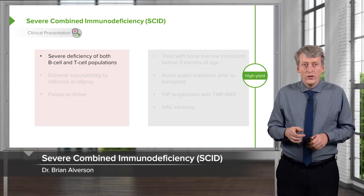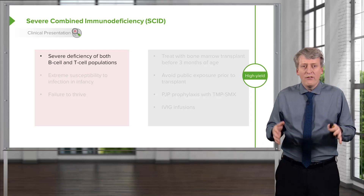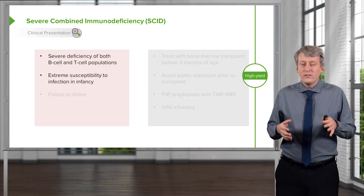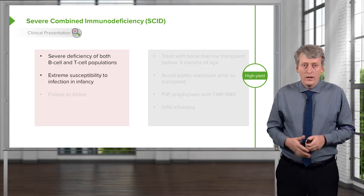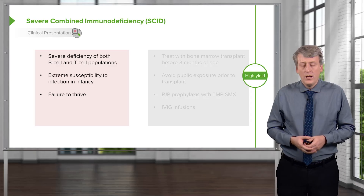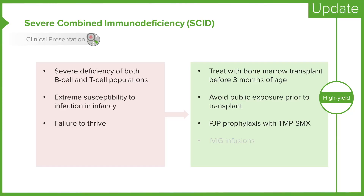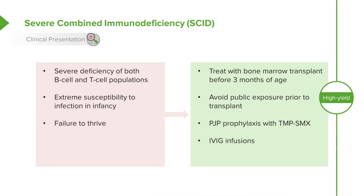Let's think about how patients present when they have T-cell deficiencies, starting with SCID, or Severe Combined Immune Deficiency. These patients have a severe deficiency of both B-cells and T-cells. They are extremely susceptible to infection in infancy and often have failure to thrive. Treatment involves a bone marrow transplant before the age of three months, avoiding public exposure prior to transplant. We provide PJP prophylaxis through trimethoprim-sulfamethoxazole starting at about one month of age. These patients may also receive IVIG infusions to replace missing immunoglobulin due to B-cell dysfunction resulting from T-cell deficiency.